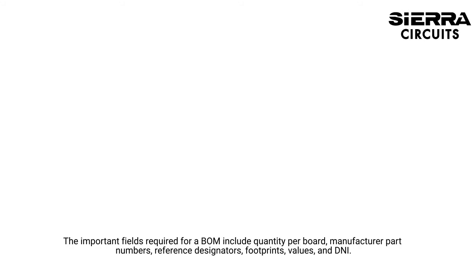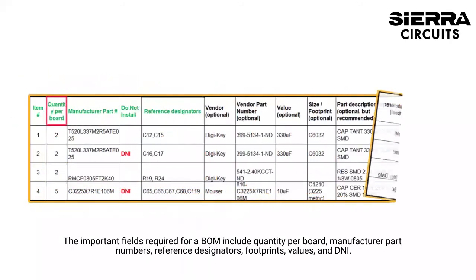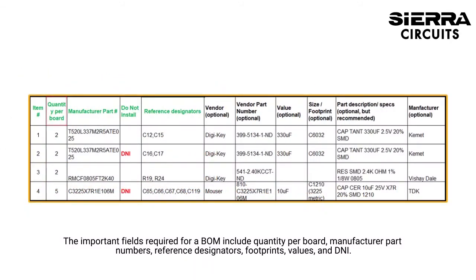The important fields required for a BOM include quantity per board, manufacturer part numbers, reference designators, footprints, values, and DNI.